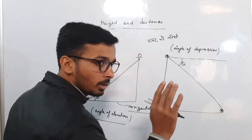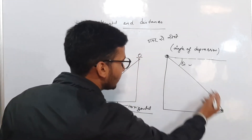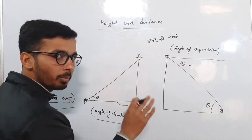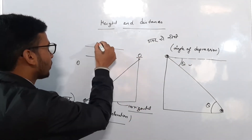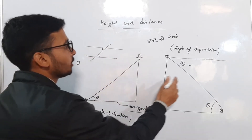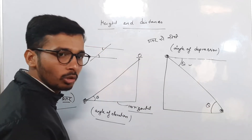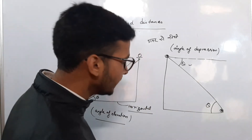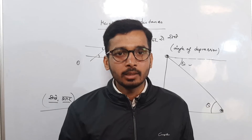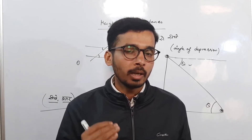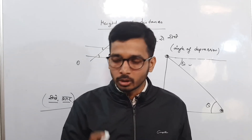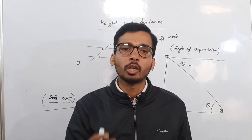Here the horizontal lines are parallel. So by the principle of parallel lines, using a transversal, the angle of elevation theta at the bottom is equal to the angle of depression theta at the top — these are called alternate angles. So by using this concept, the angle theta at the lower observer equals the angle of depression above. We use the trigonometric ratios and particular angle values to solve height and distance questions.